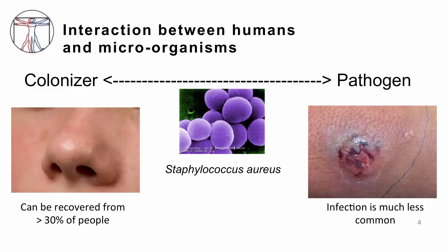It's important to remember that staph actually lives in the nose of over 30% of people, but causes infection — like the skin infection shown in this image — in very few people. Although many of you have probably encountered having a small abscess before. But for the most part, when staph lives on people, it just lives in this state of what we call colonization — it lives without causing disease.